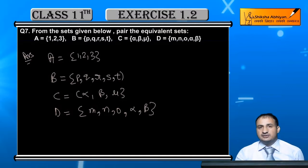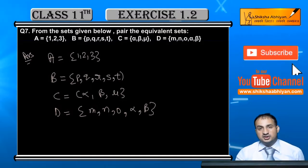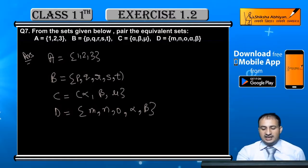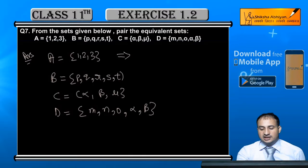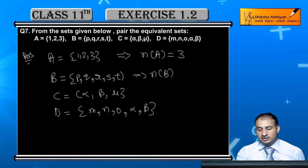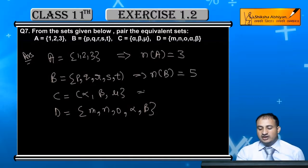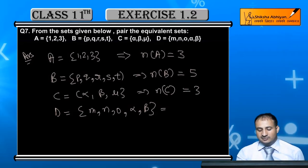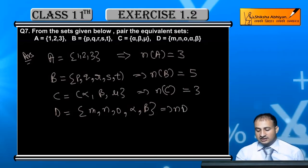Students, you have to identify equivalent pairs of sets. What are equivalent pairs of sets? Those in which the number of elements is equal, meaning their order of the set is equal. And the number of elements in D, if you see, how many are there?